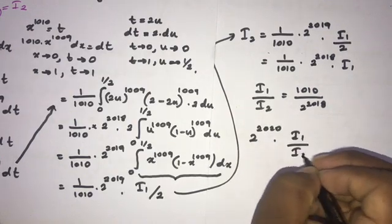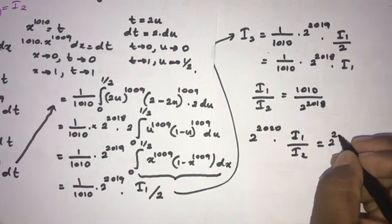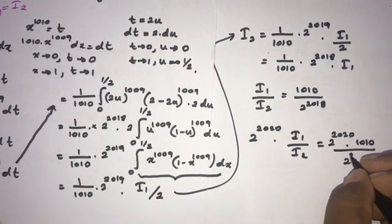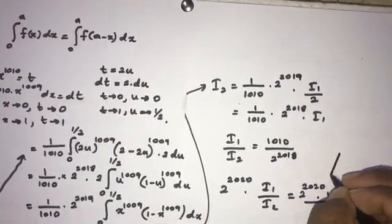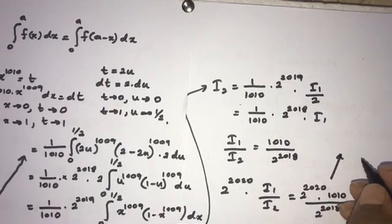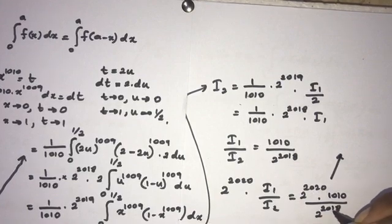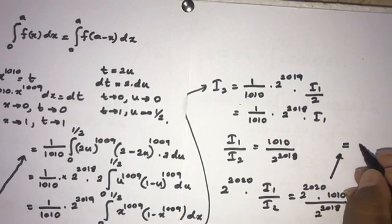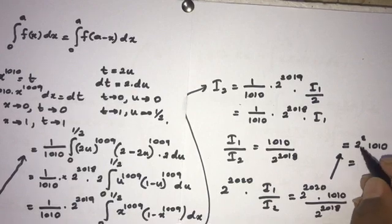Now we compute I1 over I2, which equals 1010 over 2 to the 2018. Therefore 2 to the 2020 times I1 over I2 equals 2 to the 2020 times 1010 over 2 to the 2018. The 2 to the 2018 cancels, leaving 2 squared times 1010, which equals 4 times 1010. So the answer is 4040.